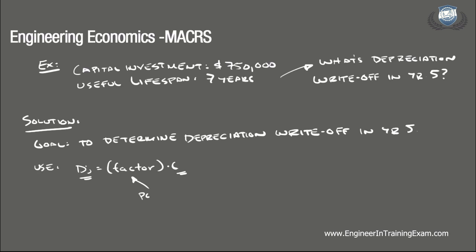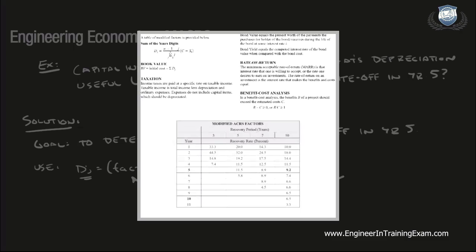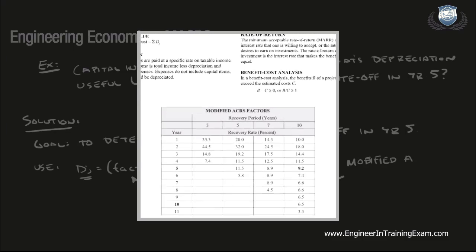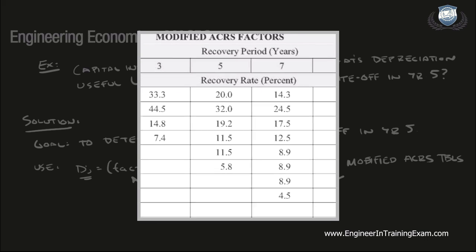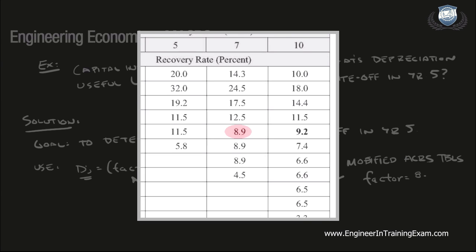Now remember, the factor can be found by noting the useful lifespan and referencing the modified ACRS table found on page 115 of the NCEES Supplied Reference Handbook. In this problem, we are given a cost C of $750,000, a lifespan of 7 years, and we want to find the depreciation charge for year 5. Referencing the modified ACRS table on page 115 of the NCEES Supplied Reference Handbook, we find that the factor is equal to 8.9%.